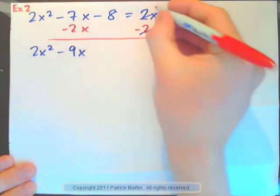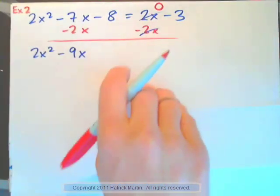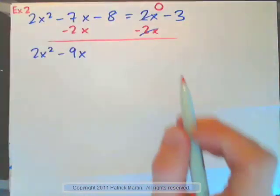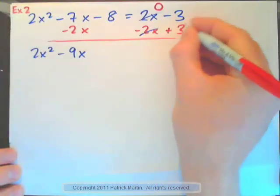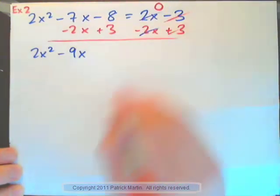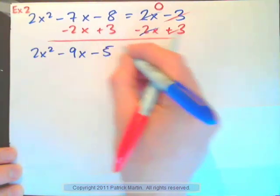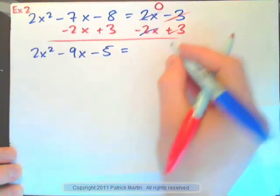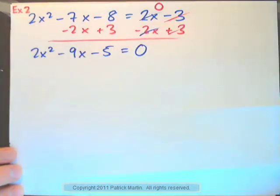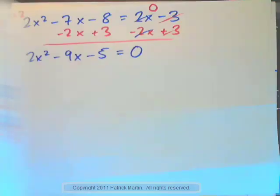And at the same time, because I'm trying to get zero on the right-hand side, that's the first step. Remember, the steps for solving quadratic equations: first step is to get zero on the right. I'll add 3 to both sides. Negative 3 plus 3 is zero. So negative 8 and 3 is negative 5, and on the right-hand side I have zero.